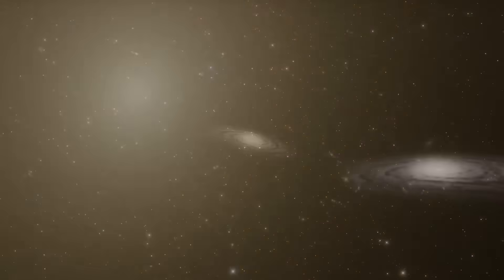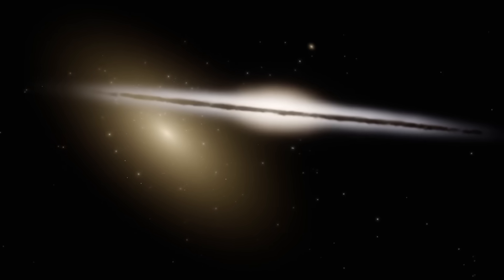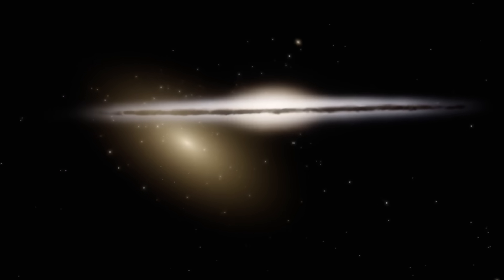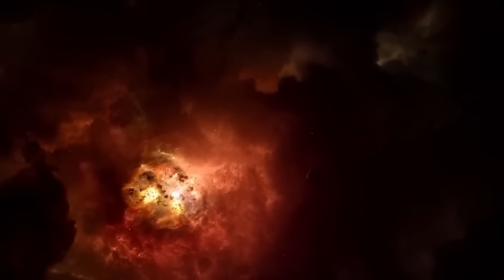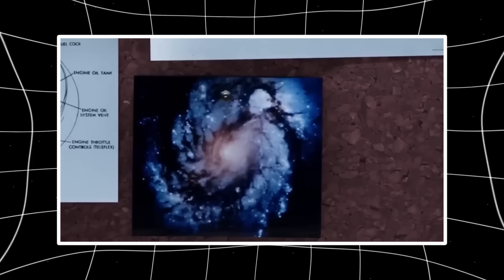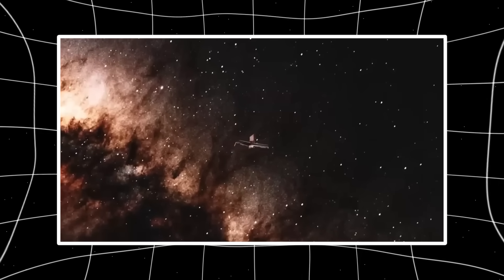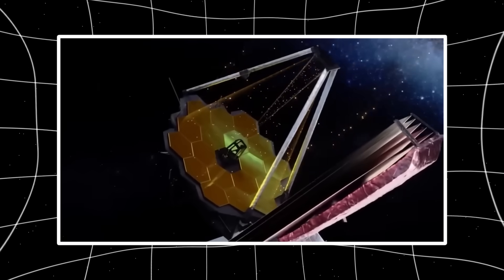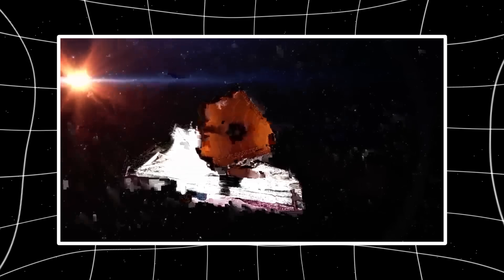But if ancient galaxies weren't shocking enough, Webb's next discovery was downright impossible. For the first time ever, it captured a direct infrared image of an exoplanet: HIP 65426b, located 385 light-years away. The image was crystal clear, but the planet's existence a total mystery. This world orbits a star that's only 15 million years old—practically a newborn in cosmic terms—and yet it's enormous, nearly seven times the mass of Jupiter. Even stranger, the star has no protoplanetary disk.